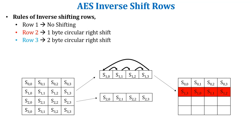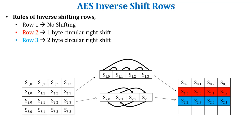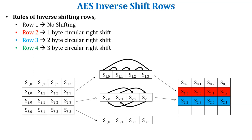Next rule is row number three: perform two byte circular right shift. Next rule is row number four: perform three byte circular right shift.